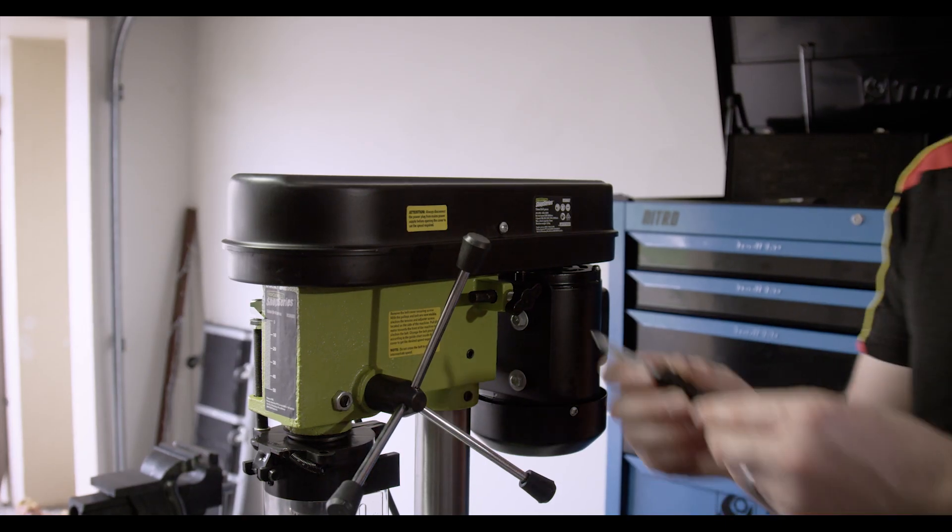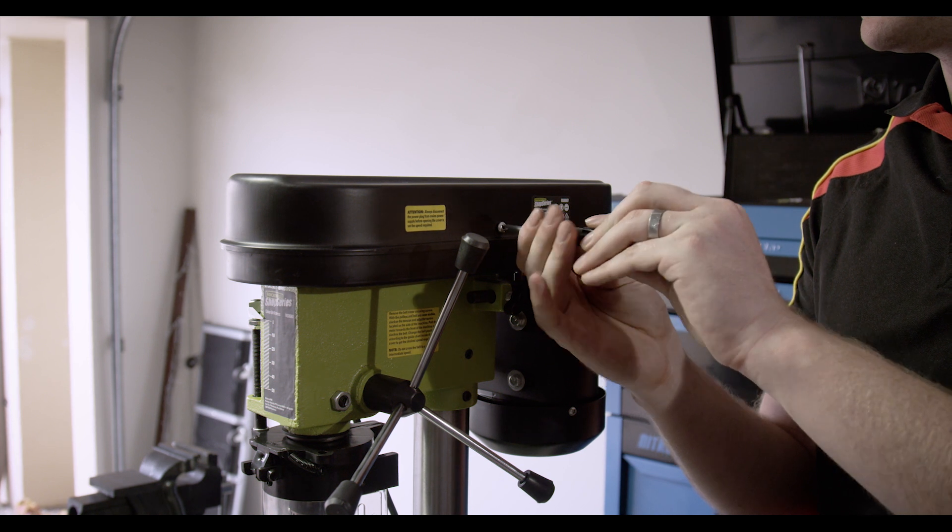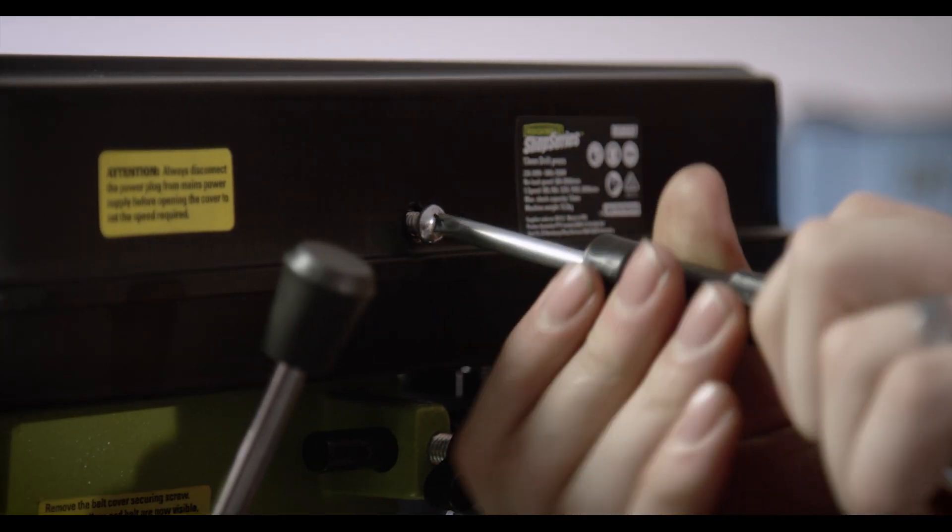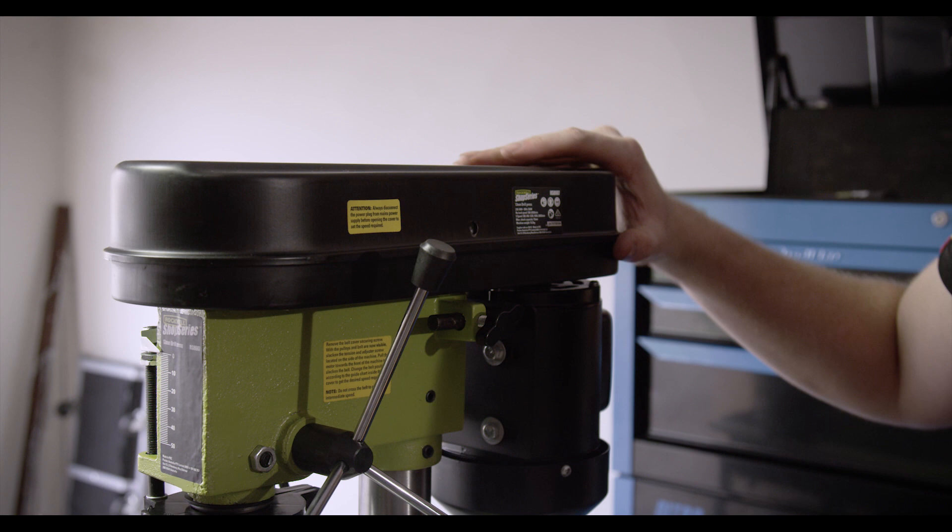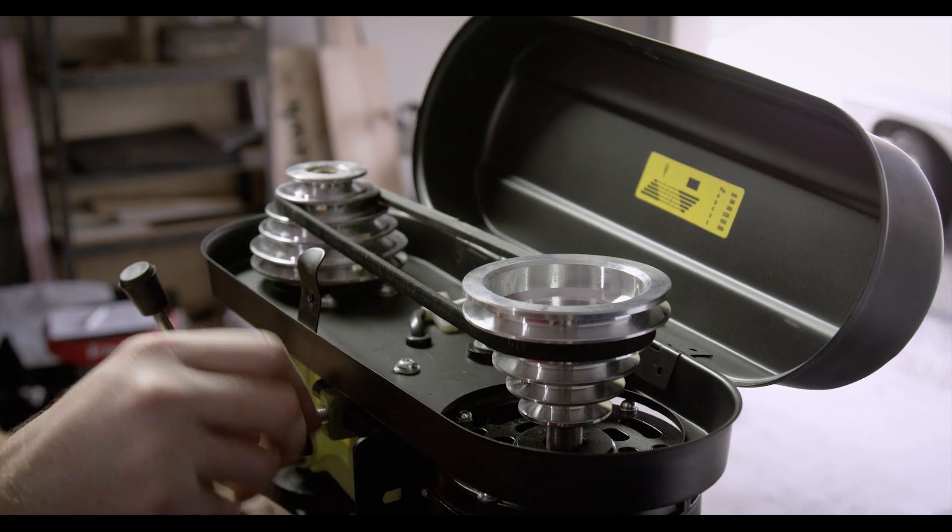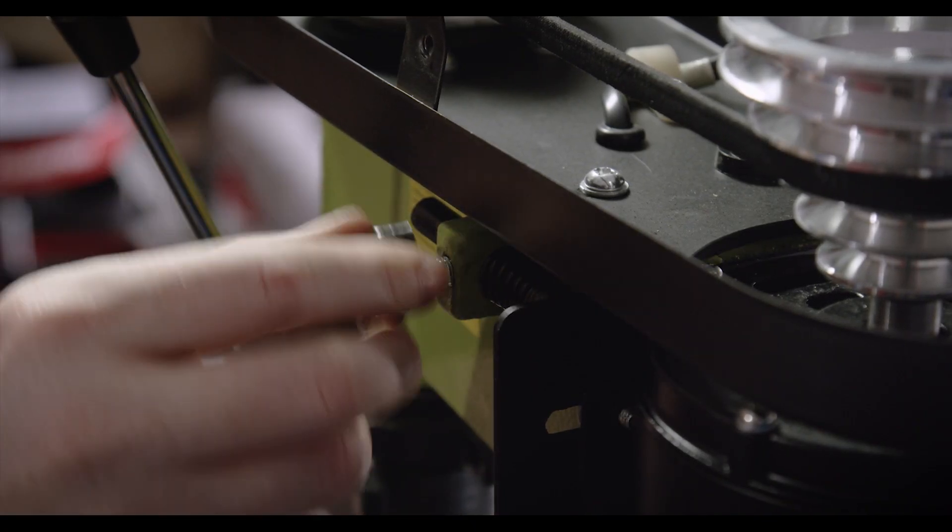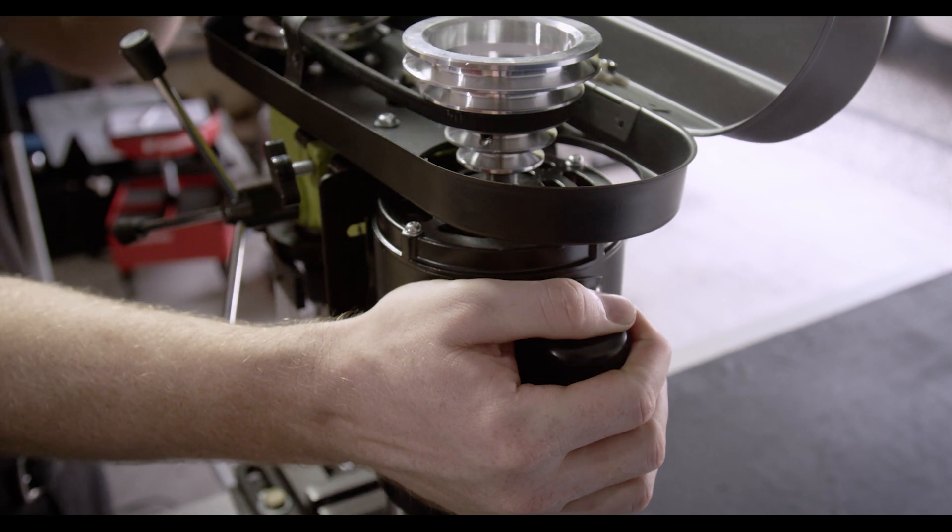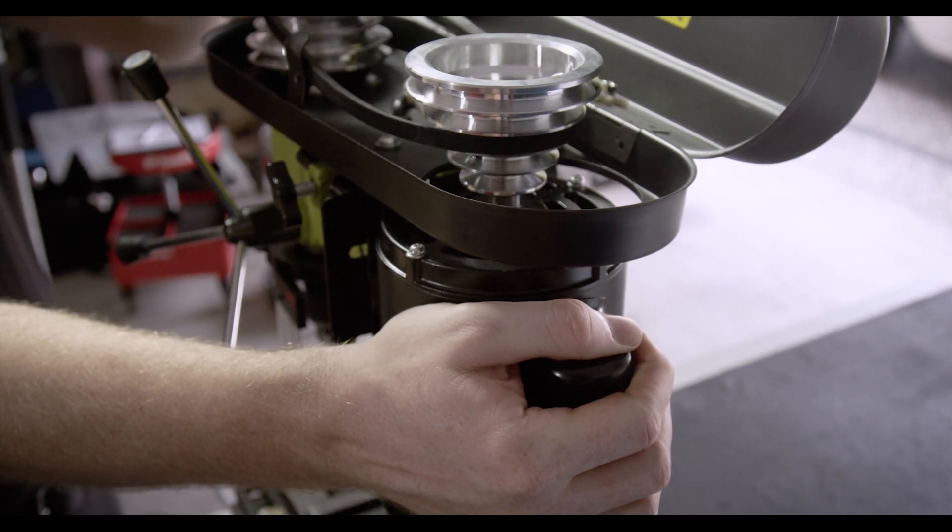On most drill presses, adjusting the drill speed is done by changing the belt position. To change the belt position on this Rockwell drill press, open up the belt cover, loosen the tension adjuster screw on the side of the machine, and pull the motor towards the front of the drill press to slacken the belt.